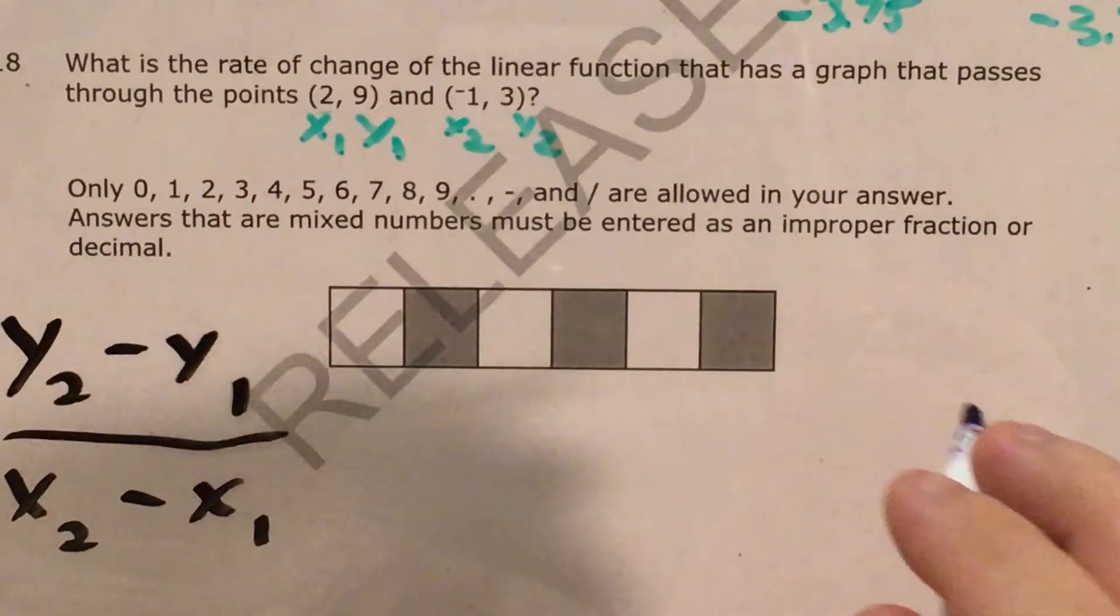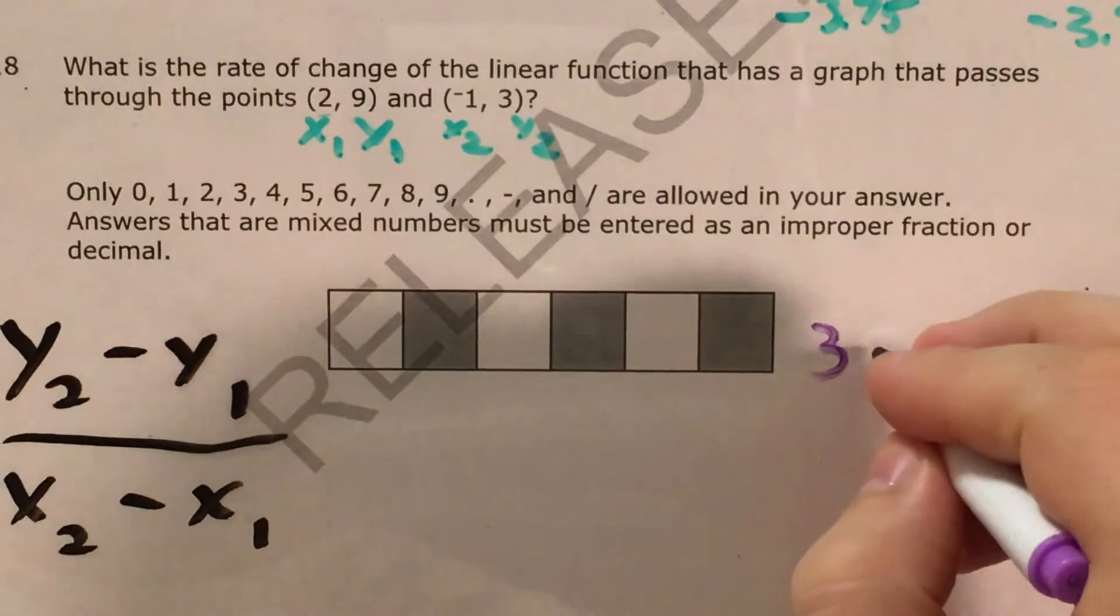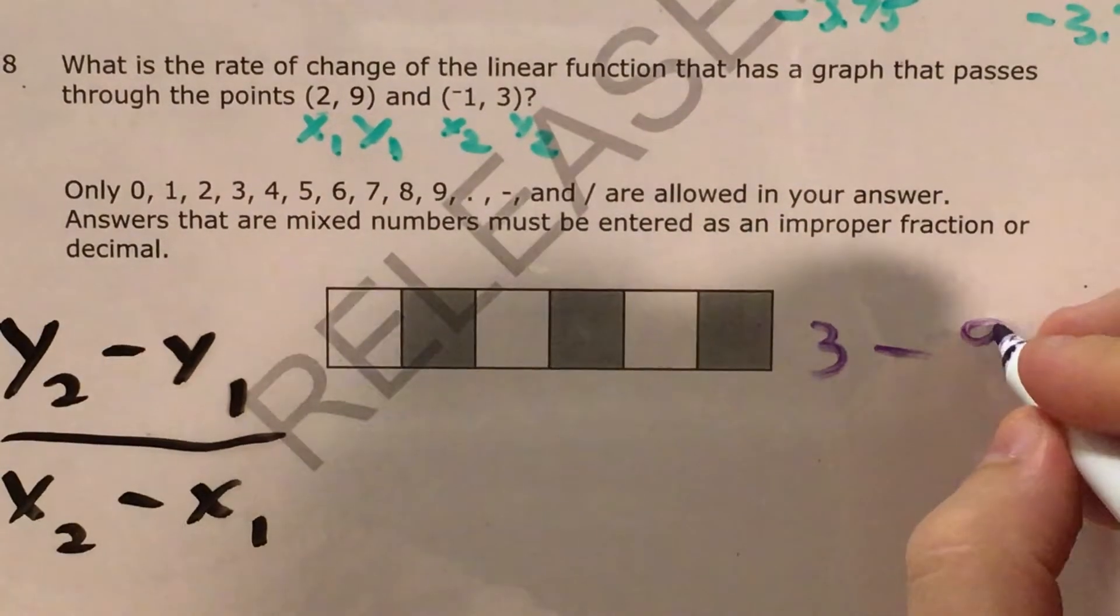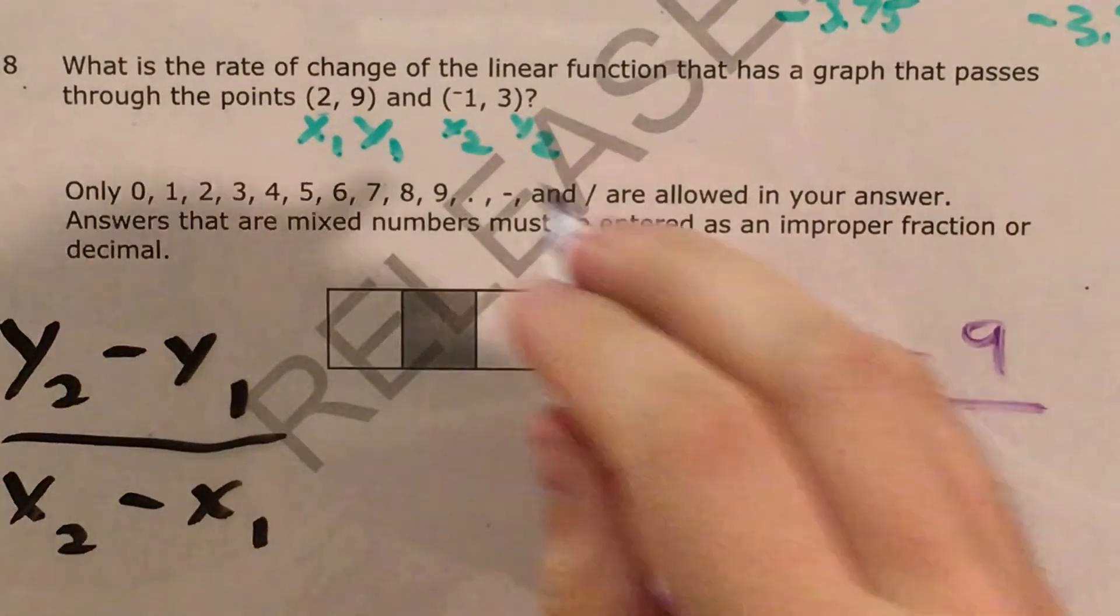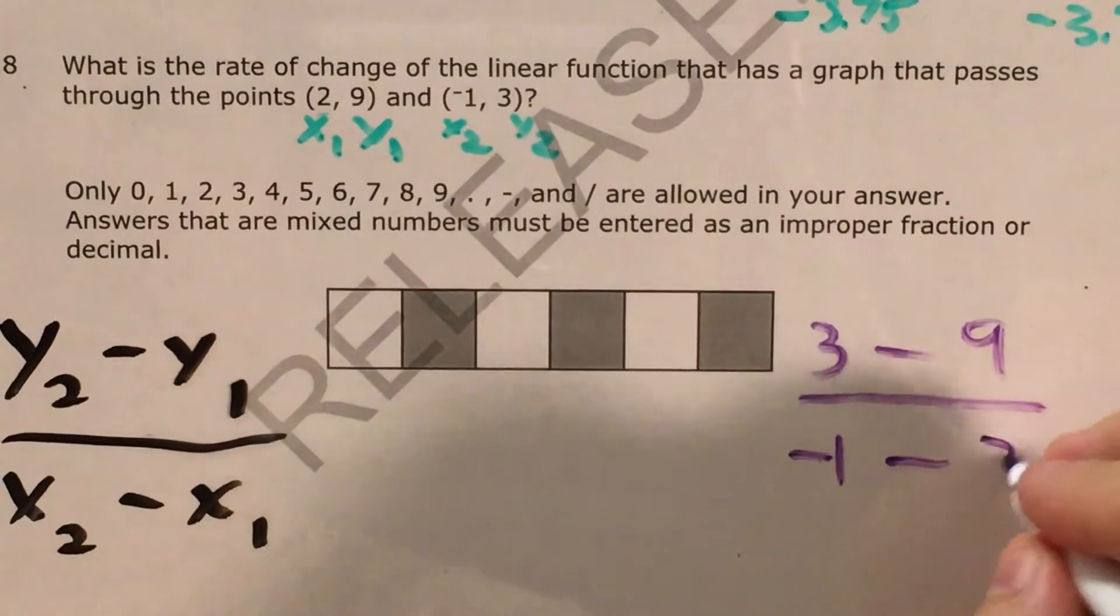So let me go ahead and plug some numbers in here. I'll come over here to do this. y2 was 3 minus y1 was 9. This is being divided by x2 which was -1 minus x1 which was 2.